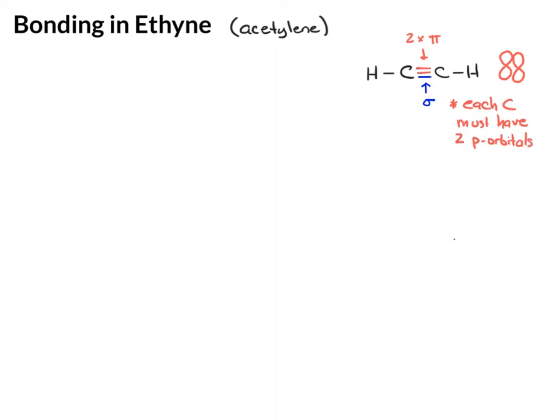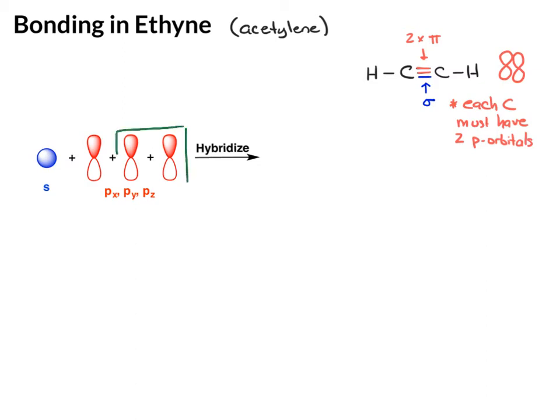Let's take a look at our starting orbitals for carbon and see how they undergo hybridization. We're just looking at one of the carbons in acetylene and then we'll duplicate it for the second carbon. If the carbon needs to have two pi bonds, we start with our s orbital and the three p-orbitals, but this time we're going to hold two p-orbitals back from the hybridization. So only one s and one p-orbital will undergo the hybridization.